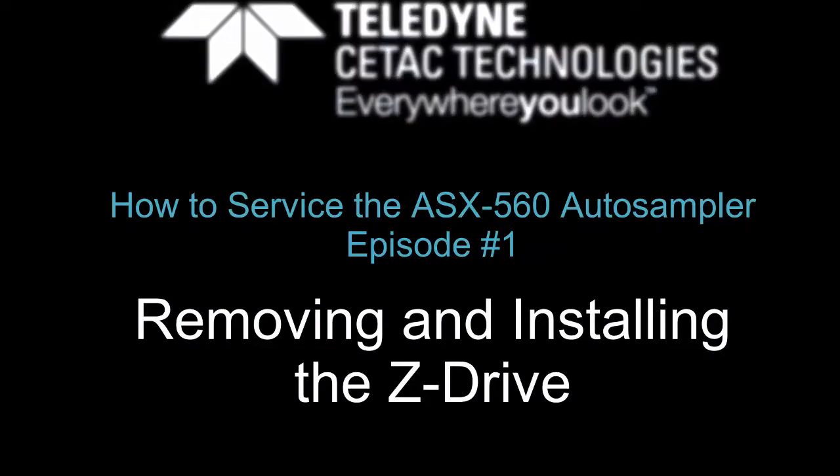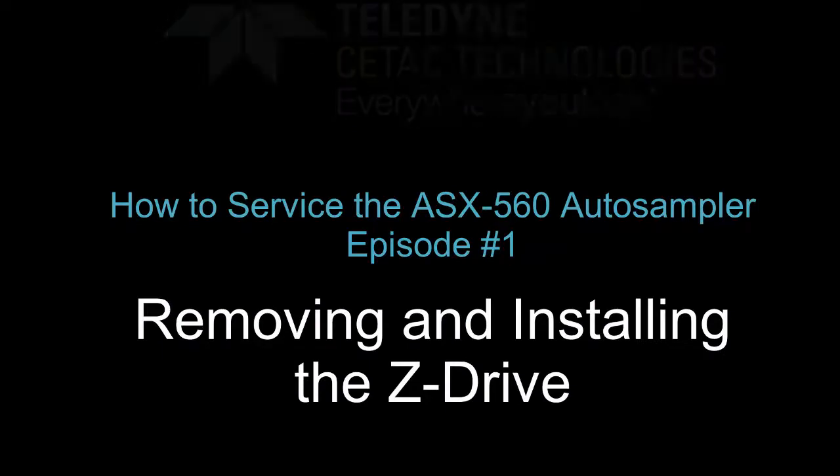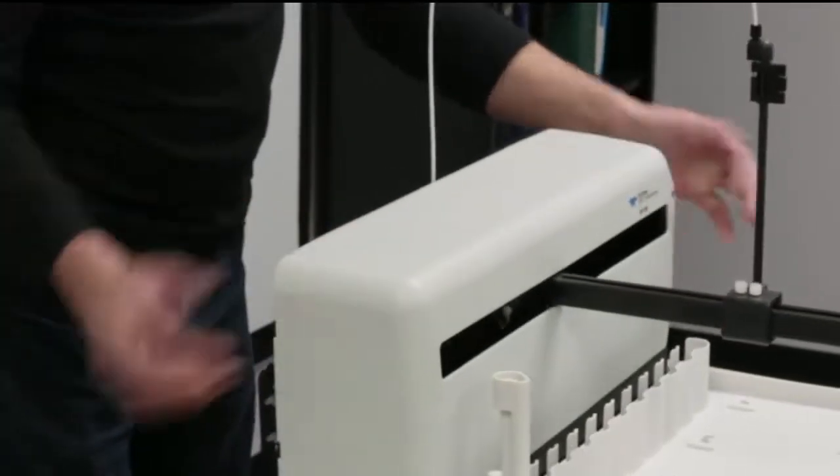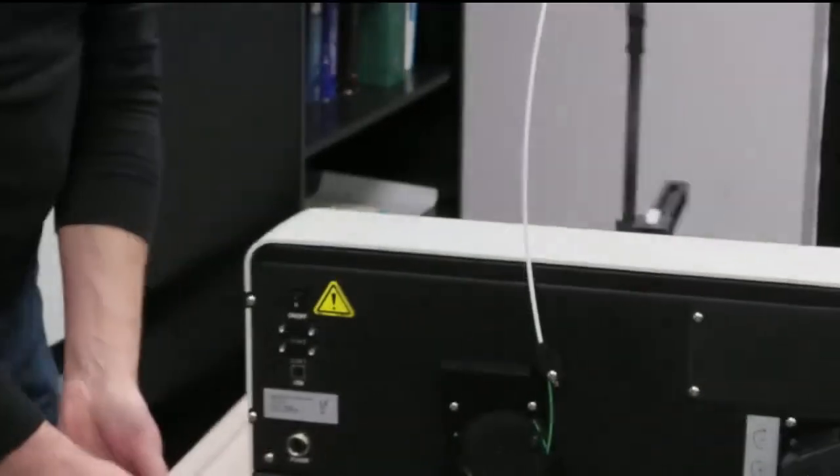Welcome to the first video on how to service the ASX 560 auto sampler. A common task is to replace the Z drive. First, make sure the power is turned off.